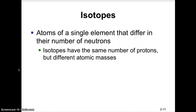Isotopes are forms of a single element that differ in their number of neutrons. For example, carbon-12, carbon-13, and carbon-14 are all carbon but differ in mass — having six, seven, and eight neutrons respectively.